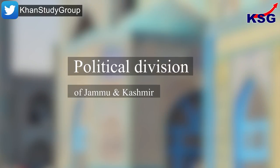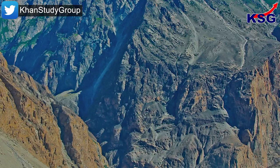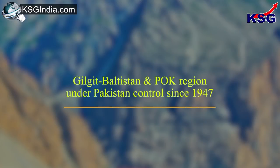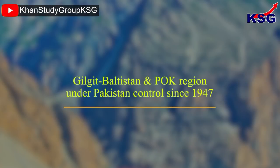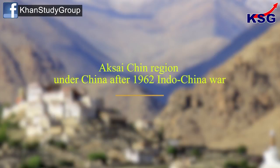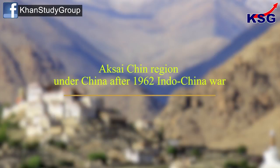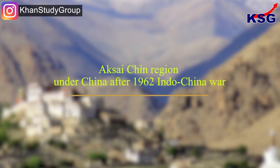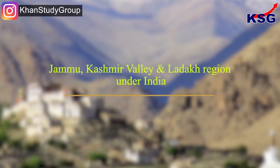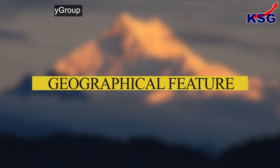Talking about the political divisions of Jammu and Kashmir, this Union Territory has three divisions. The Gilgit-Baltistan and POK region has been under Pakistan control since 1947. The Aksai Chin region has been under China after the 1962 Indo-China war. And the Jammu-Kashmir valley and Ladakh region is under India.